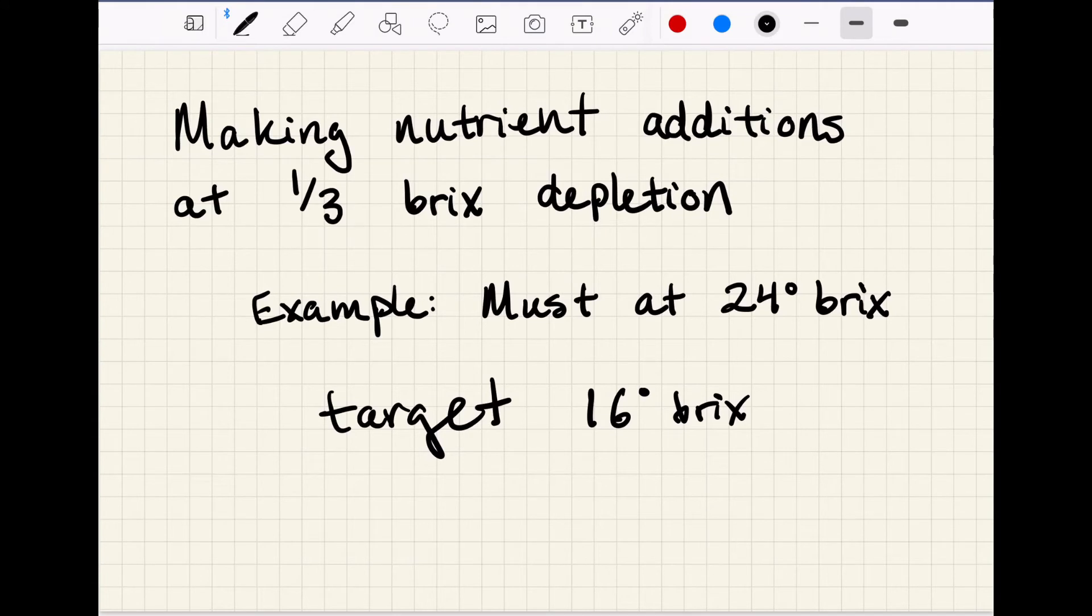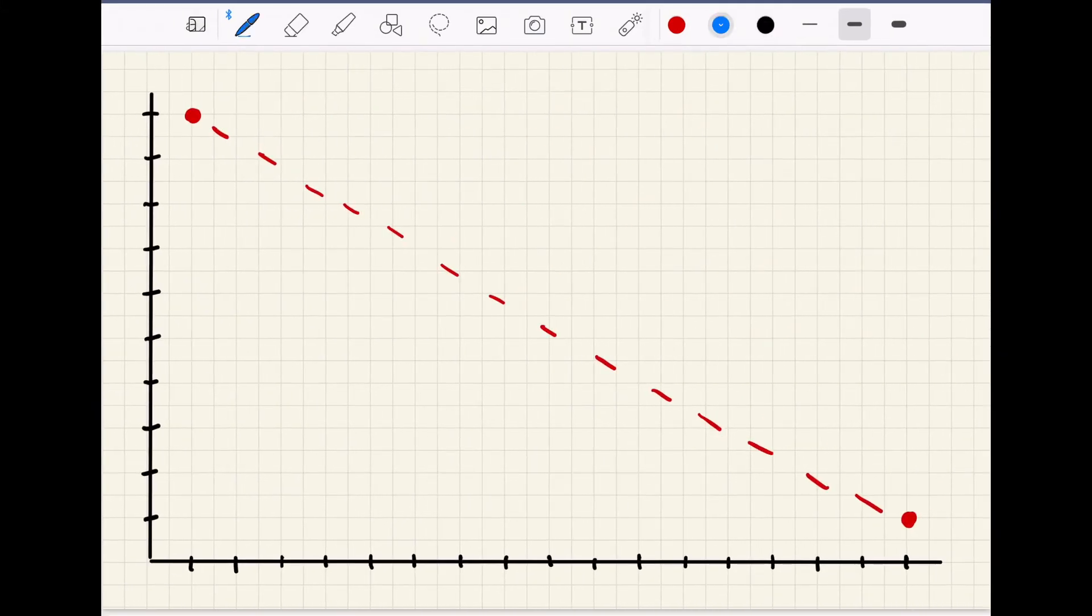So if you're targeting an addition at 16 bricks, you're essentially trying to predict when that will happen. And we know that our bricks curve doesn't usually look like this. We also know that in the sharpest parts of the curve, when the rate is changing the fastest, the more often we need to be checking in order to get an accurate picture of what's happening.